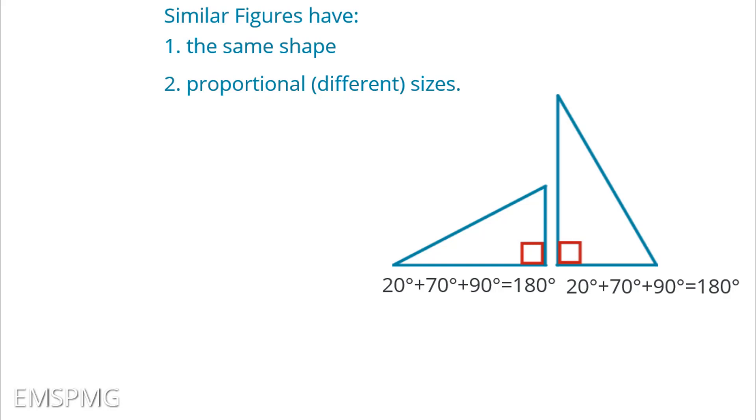So just a brief review. Remember similar figures have first the same shape. When we're talking about the same shape with figures, we mean that the angles for all of the corresponding locations are going to be congruent. So the same shape means congruent angles. Proportional or different sizes means we're going to make fractions for each of the side lengths and make sure that those fractions are the same. Now again we're focusing in this lesson on angle angle, so we're just going to worry about step number one here.